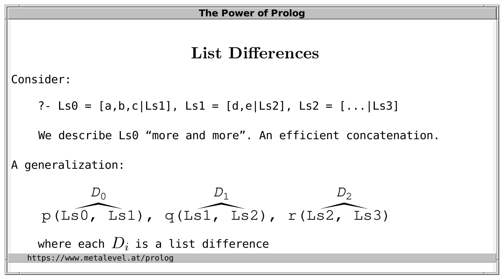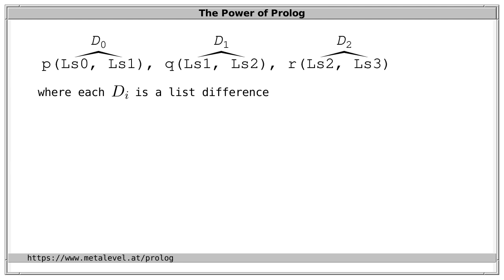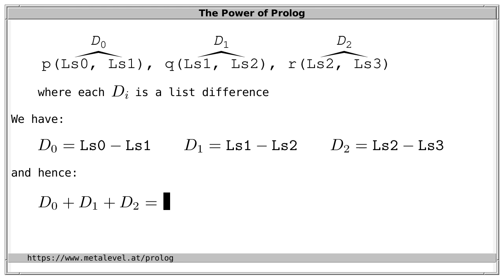It's clear that this subsumes the example above. The only assumption we make is that each respective pair of arguments is a list difference. This means that symbolically D0 is LS0 minus LS1, D1 is LS1 minus LS2, and D2 is LS2 minus LS3.